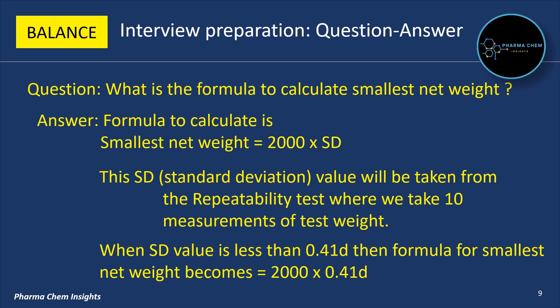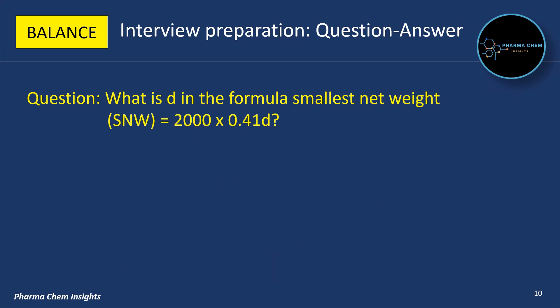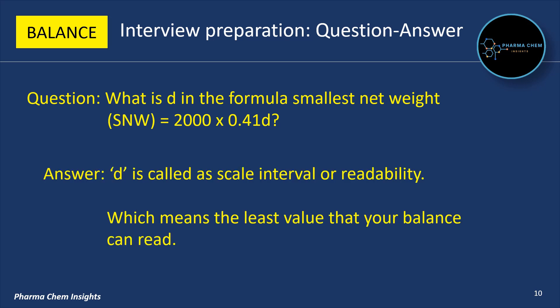When the SD value is less than 0.41D, the formula for smallest net weight becomes: SNW = 2000 × 0.41D. Here, D is the scale interval or readability, which means the least value that your balance can read.